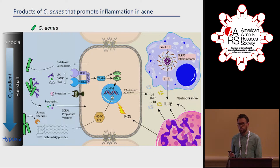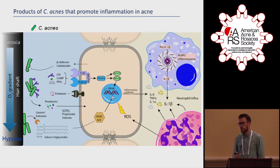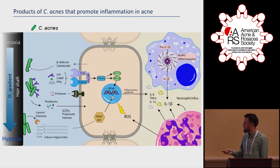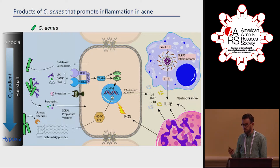C. acnes also produces other molecules and metabolites such as porphyrins, which are proposed to be inflammatory. Under hypoxic conditions, C. acnes can incorporate and metabolize glycerol to produce short-chain fatty acids, which diffuse into keratinocytes and sebocytes, inhibit histone deacetylases, and enhance inflammation. However, these are only a limited number of reported factors, and I'm sure there are many more to be discovered.